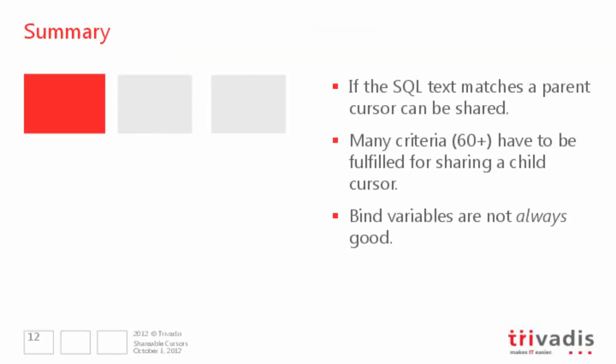In summary: parent cursors contain the SQL text and can be shared when the SQL text is exactly the same. Child cursors can be shared when the execution environments are compatible — and there are more than 60 reasons why they might not be. If you see many child cursors, check V$SQL_SHARED_CURSOR. Finally, bind variables are not always good — even with adaptive cursor sharing in 11g, they can sometimes lead to problems. Use them when selectivity makes it worthwhile.